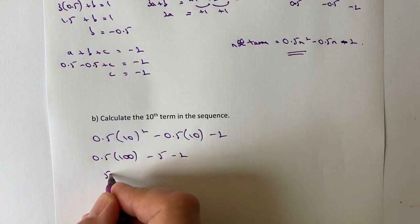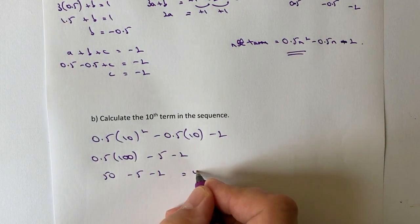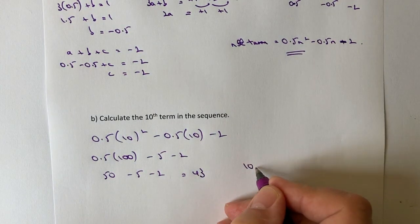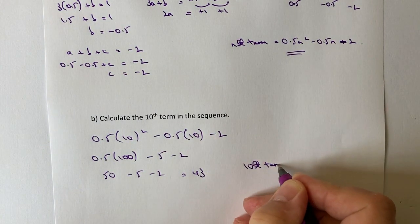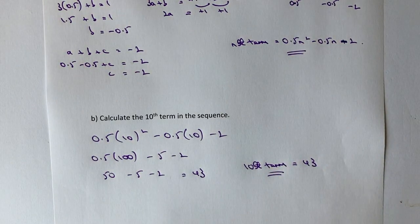A half of 100 is 50, minus 5, minus 2. So that's going to give me an answer finally of 43. So therefore, the 10th term is going to be equal to 43, and that would be the answer to part b of this question.